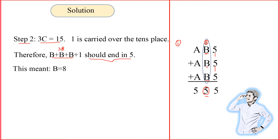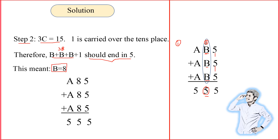It's verified and correct. The only possibility is B equal to 8. The tens place gives us 25, so we carry 2 over to the hundreds place. I substitute the value of B throughout the problem.